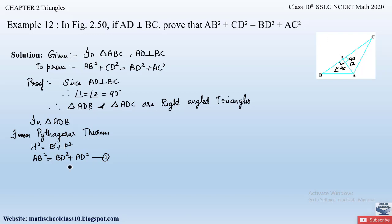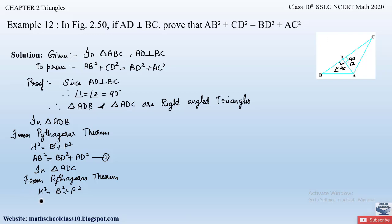Similarly, in triangle ADC, from Pythagoras theorem: hypotenuse² = base² + perpendicular². The hypotenuse is AC (opposite the 90° angle), so AC² = CD² + AD². Let this be equation 2.